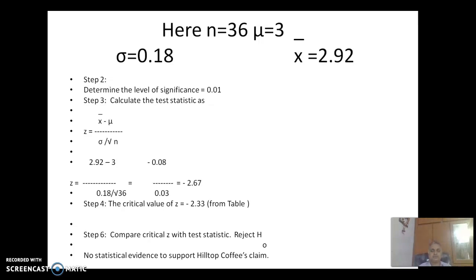N equals 36. We substitute these values into the formula. Then we get, after calculation we get minus 2.67.